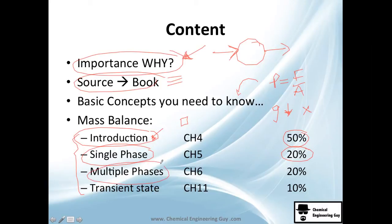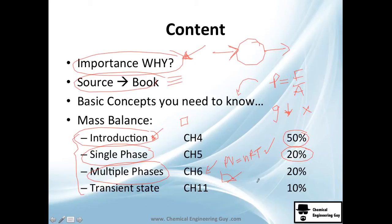Ideal gas, real gases, compressibility — all of that. I would say this is about 20% of the course. Then we jump to multiple phase, which is very important. It has a lot of theory, and the important part is that it helps you understand other concepts in other classes. When you go to thermodynamics, you'll say 'Oh, I remember that — I saw the ideal gas equation in my mass balance course,' or you'll see boiling points and phase diagrams and be happy you already covered that. That's chapter six, also 20%, but it has a lot of content, so take care.